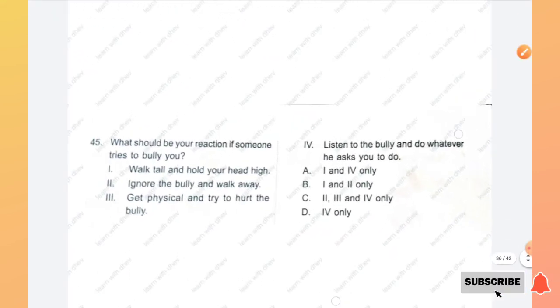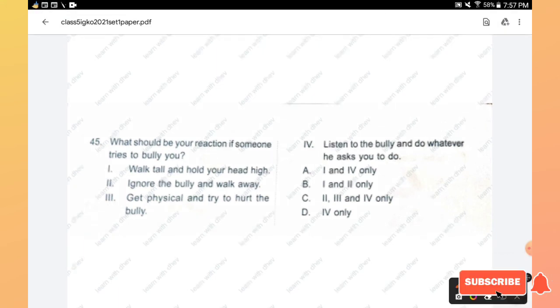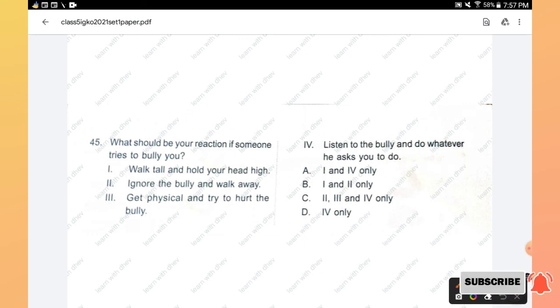Question number 45: What should be your reaction if someone tries to bully you? Walk tall and hold your head high, ignore the bully and walk away, get physical and try to hurt the bully, listen to the bully and do whatever he asks you to do. So what should be your reaction if someone tries to bully you? Obviously the first one and second one: walk tall and hold your head high and ignore the bully and walk away. 1 and 2 only is the right answer.